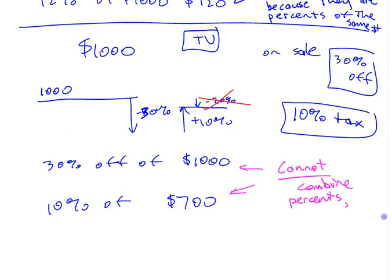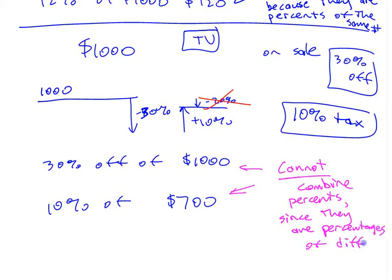This is an important idea you should write down: percentages of different numbers, percentages of different values — you can't combine them.